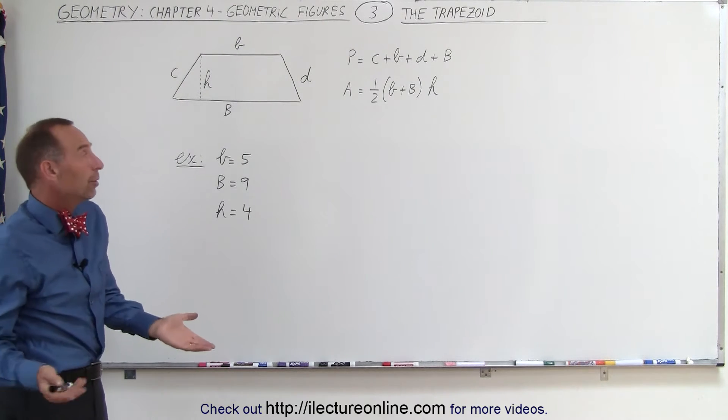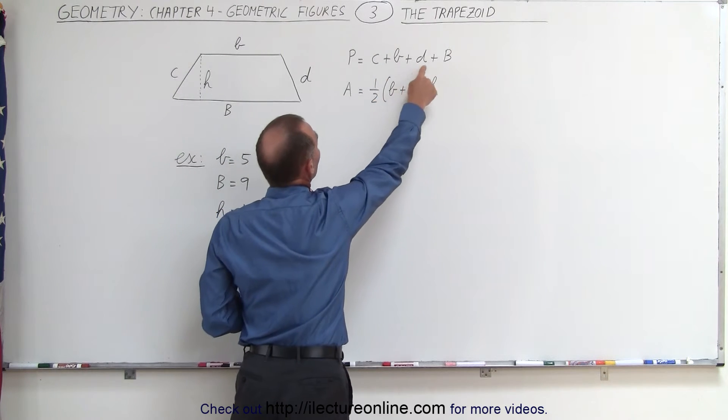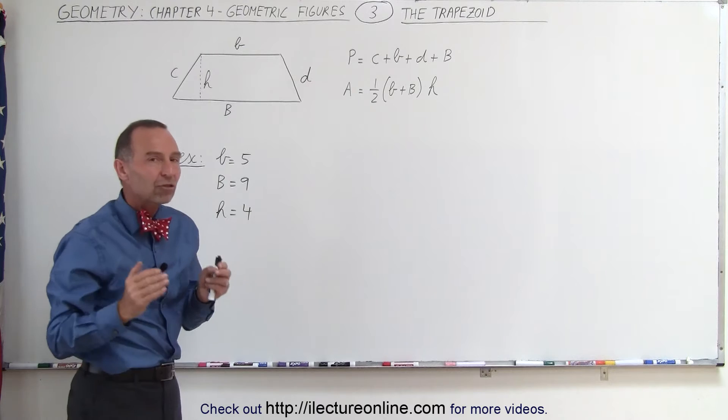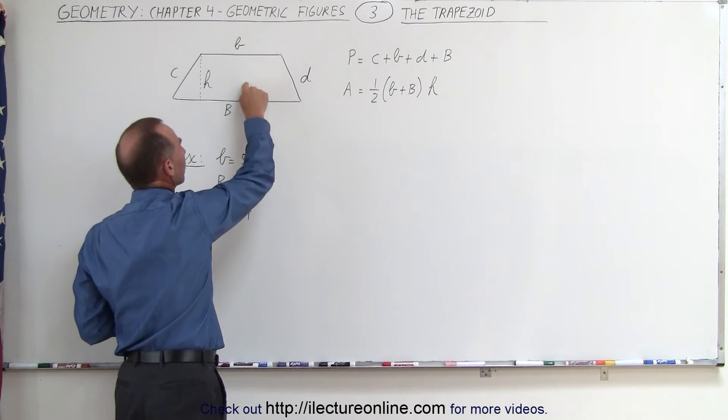To find the perimeter, we simply sum up all four of the sides. To find the area, we take the average length of the two sides that are parallel to one another.